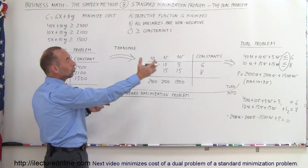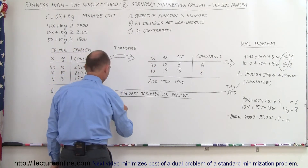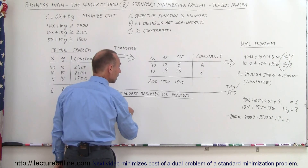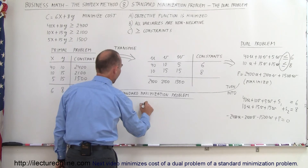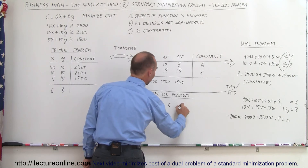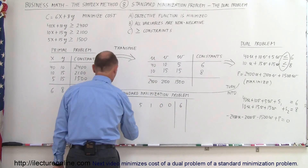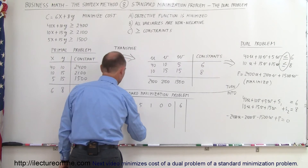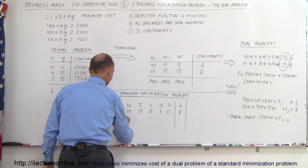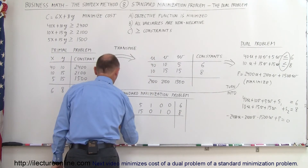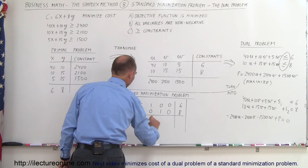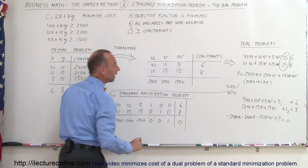That then becomes the simplex tableau for the dual problem, which is now a standard maximization problem. Writing that in: my first row is 40, 10, 5, slack variable one, 0, 0, and then 6. My second row becomes 10, 15, 15, 0, 1, 0, and 8. And my third row becomes minus 2400, minus 2100, minus 1500, 0, 0, 1, and zero. And now I'm ready to go.